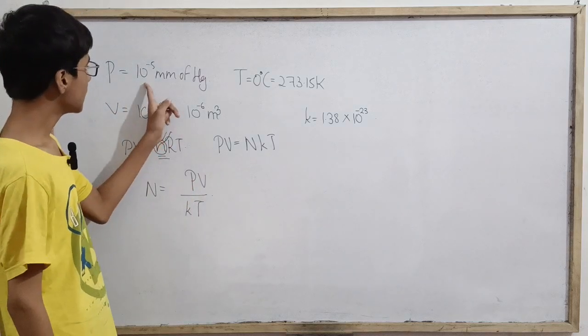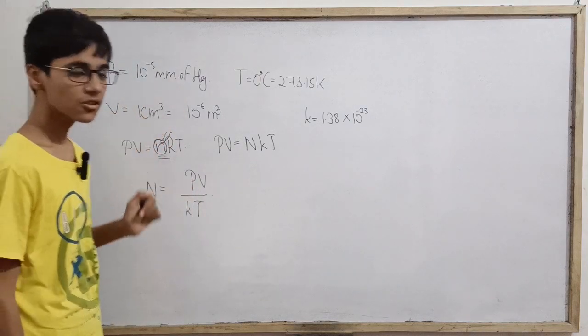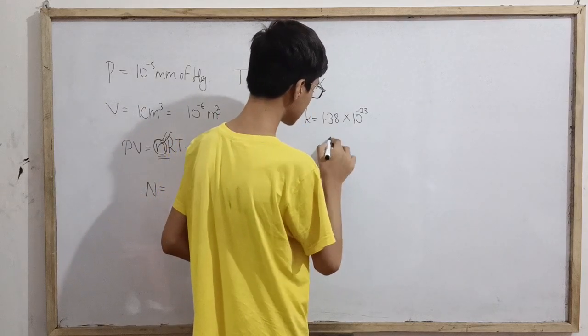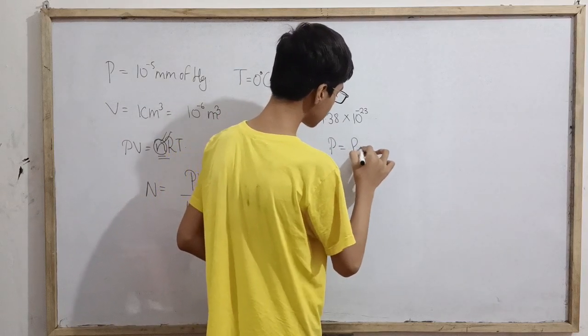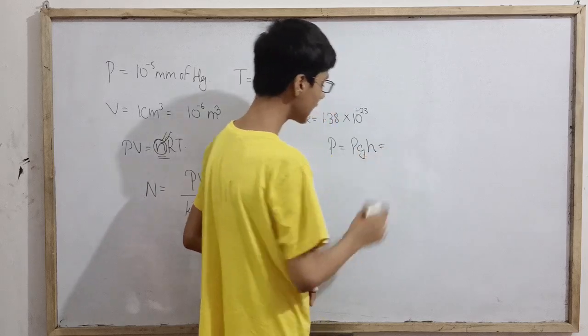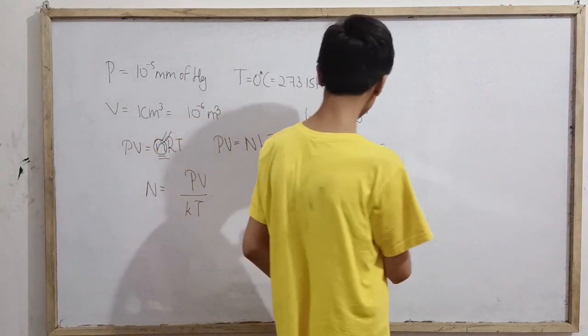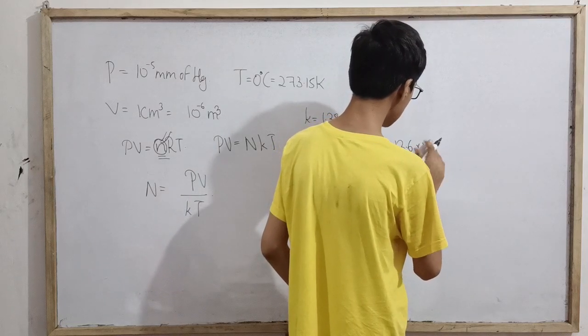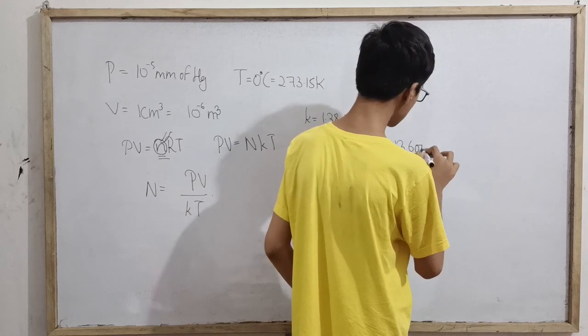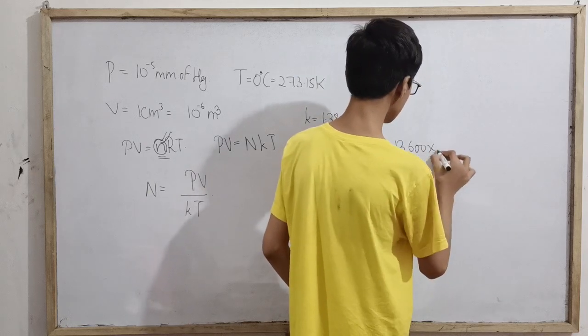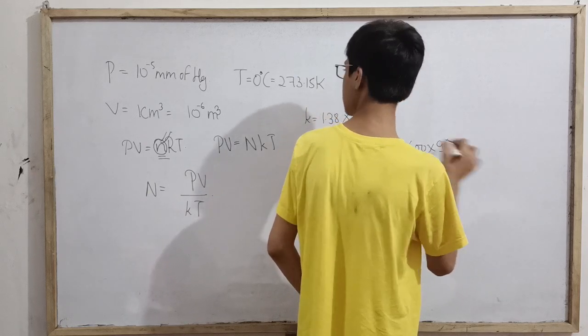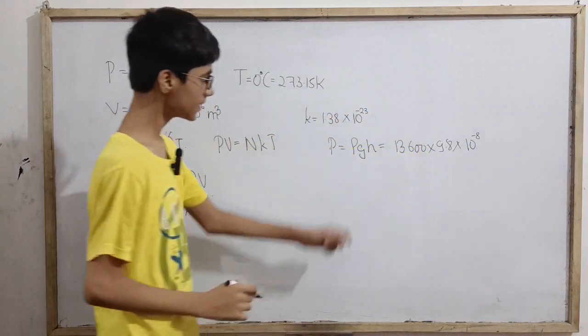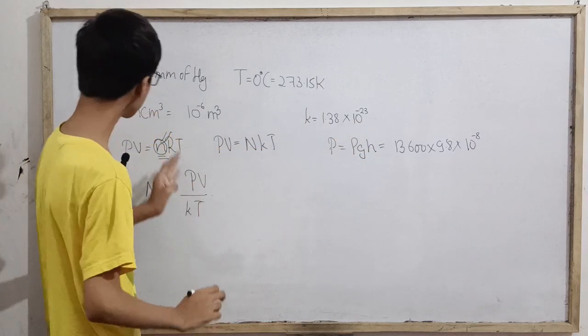Here pressure is in terms of millimeters of mercury, so let's calculate it: 10 to the power minus 5 mm of mercury. Pressure is ρgh from fluid mechanics. Density of mercury is 13,600 into 9.8 into 10 to the power minus 8 meter. That is the pressure.